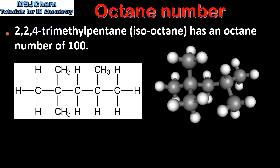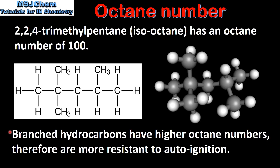2,2,4-trimethylpentane, which is also called iso-octane, has an octane number of 100. 2,2,4-trimethylpentane is a branched hydrocarbon. Branched hydrocarbons have higher octane numbers and therefore are more resistant to auto ignition and knocking.